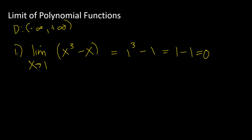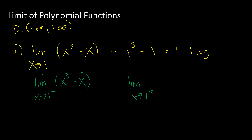Since this is a two-sided limit — there is no positive or negative indication — it also means that the limit of that function as x approaches 1 from the left and the limit as x approaches 1 from the right are also the same. Since 0 is a real number and a real limit, both the left and right limits are also equal to 0.